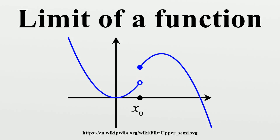A formal definition is as follows. The limit of F as X approaches P from above is L if for every ε > 0, there exists a δ > 0 such that |F − L| < ε whenever 0 < X − P < δ. If the limit does not exist, then the oscillation of F at P is non-zero.